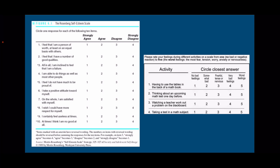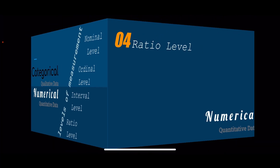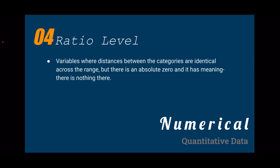From the numerical group, the next level is ratio. Ratio is the highest level of measurement, meaning all characteristics and analyses can be done at the ratio level. It is defined as variables where the distances between categories are identical across the range, and there is an absolute zero that has meaning — meaning nothing exists there. Age is considered ratio and continuous. It has an absolute zero, and the difference between values is meaningful. Absolute zero means a person aged zero is not existing or alive. Other examples are height and weight — when a person's height and weight is zero, it means they are not even alive.